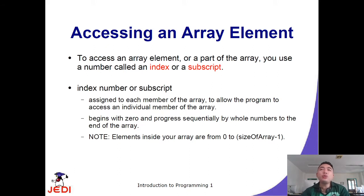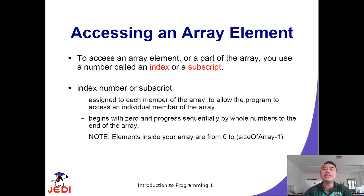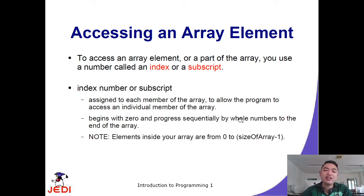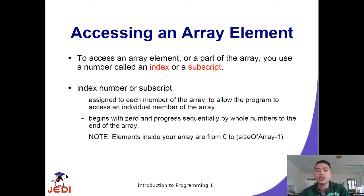Every contiguous block of memory in an array is identified by what we call an index or subscript. The index is the address assigned to each member of the array, allowing programs to access individual elements. Always remember: the index begins at zero, meaning the first element is index 0, and it progresses sequentially. For an array of size 100, the valid indexes are 0 to 99.